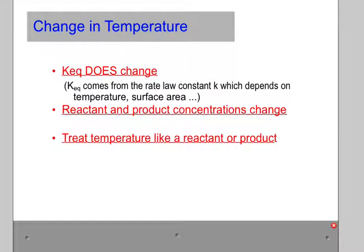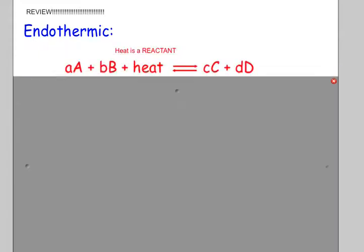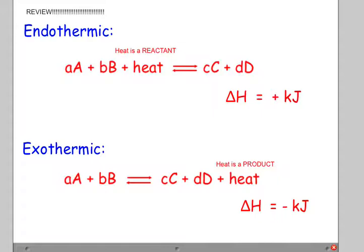As a review: if something is endothermic, your delta H will be positive, and heat is a reactant — so you put it on the left side of your equation. If it's exothermic, your delta H is negative, and heat will be a product. Once you know where the heat goes, you can treat it just like a reactant or product — exactly what we just did with concentration.